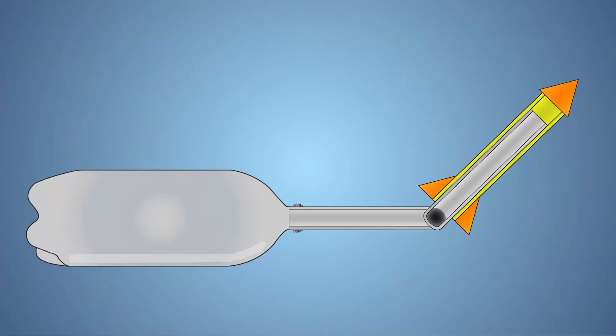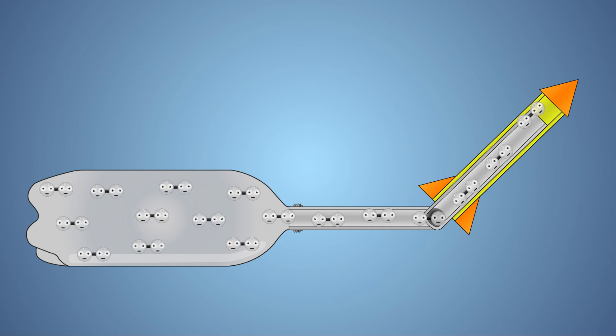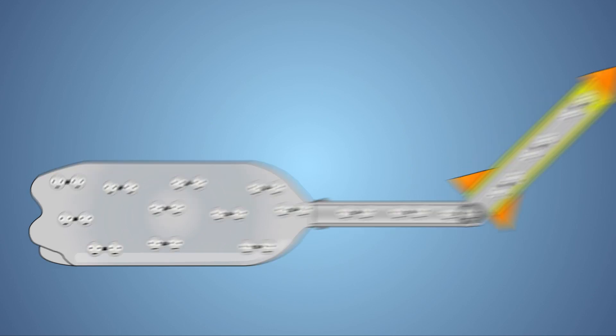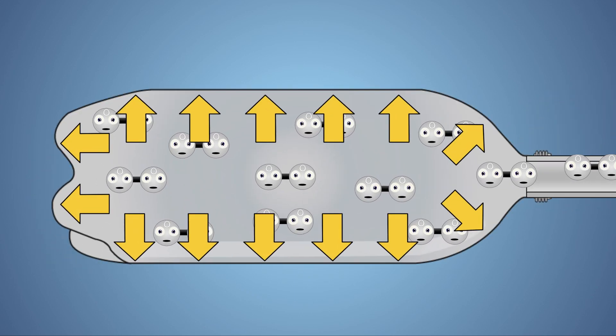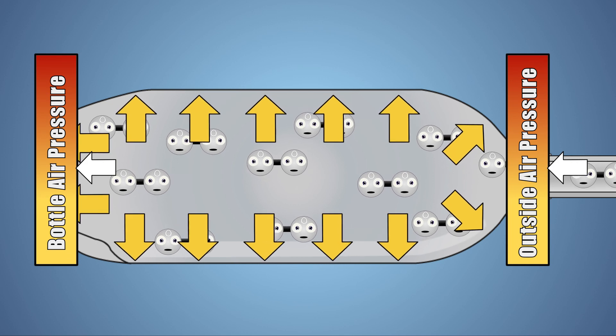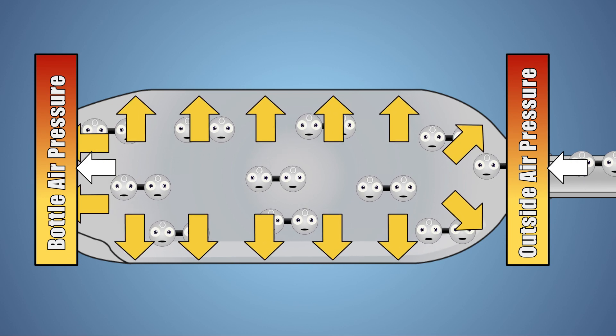Let's look at this experiment a little closer. At the start of our experiment, the bottle and pipe are full of air molecules. These molecules press on the walls of the bottle with an equal force, known as pressure, as the air molecules in the outside environment.